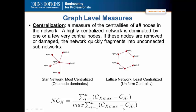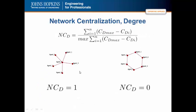The maximum will be this quantity calculated on a star network of similar size. The star network is the most centralized and defines the max value in the denominator. So the star network will of course have a network centralization of 1, because the numerator and the denominator are the same.